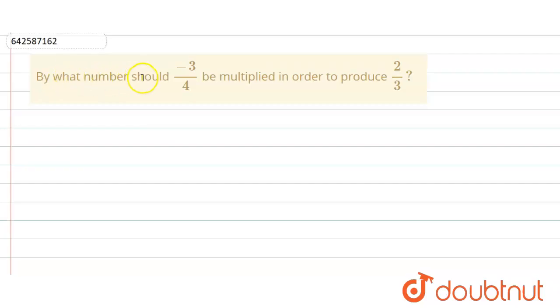In the given question, by what number should minus 3 divided by 4 be multiplied in order to produce 2 divided by 3?